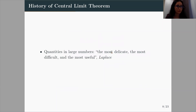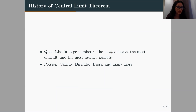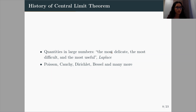Laplace gave 40 years working on the central limit theorem and related subjects. He said that quantities in large numbers — meaning adding the same random variable to itself again and again — is the most delicate, most difficult, and most useful part of the whole probability theory. The modern rigorous probability theory is not so old; it was rigorously defined in the 1930s by Kolmogorov. But these theorems — the law of large numbers, the central limit theorem — were older than modern probability theory. In some sense, they defined modern probability theory. This is why the name 'central' limit theorem makes a lot more sense.